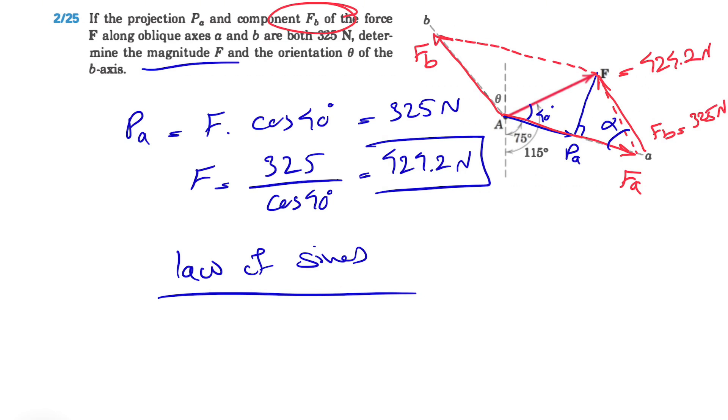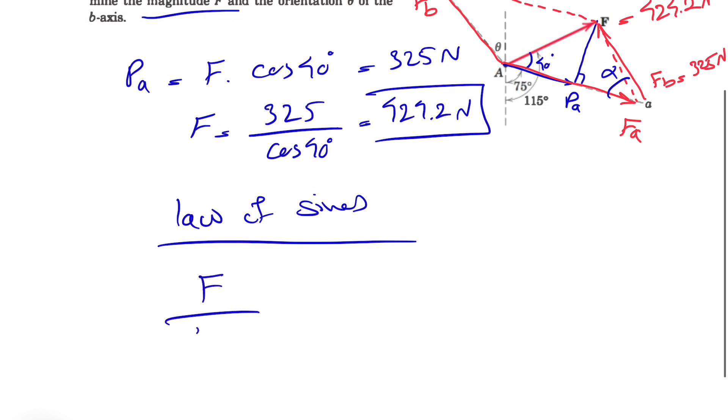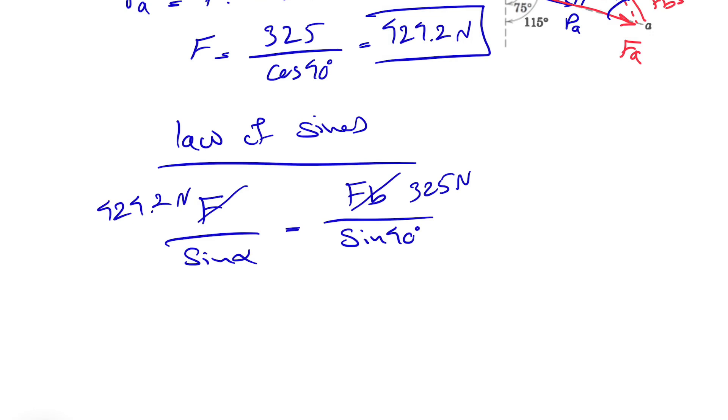If that's alpha, we know that F/sin(α) = Fb/sin(40°). We already know F = 424.2 Newtons and Fb = 325 Newtons. From here, we can find sin(α) = 424.2·sin(40°)/325.